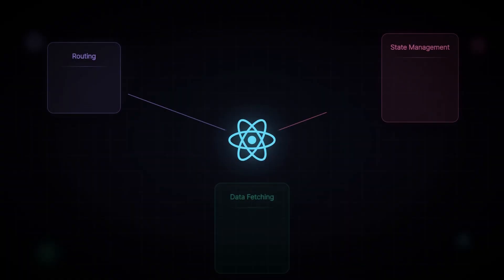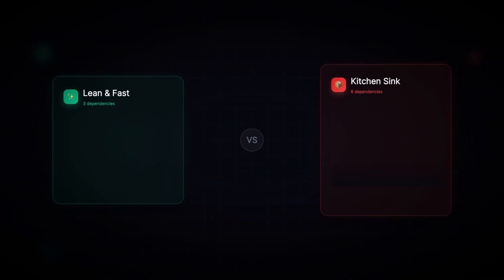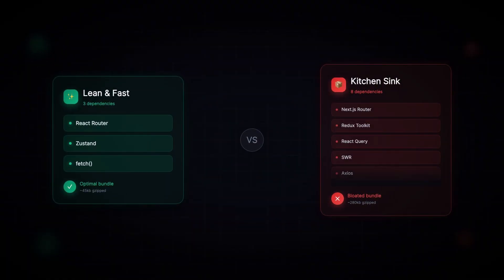When it comes to page routing and data fetching, React leaves it up to you to choose external libraries. You might use React Router DOM or TanStack Router for routing, and Redux, Context API, or TanStack Query for state management. This is great because you have flexibility, but you need to understand what to use and when. You pick and choose without bloating your application.